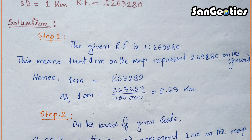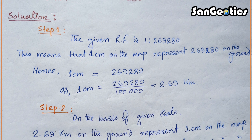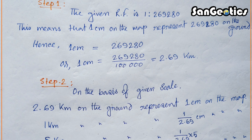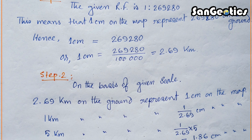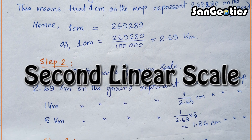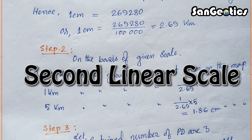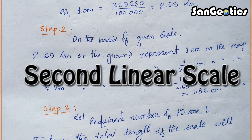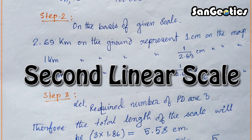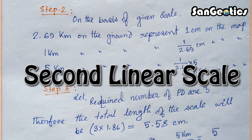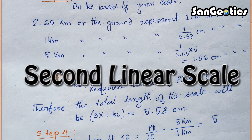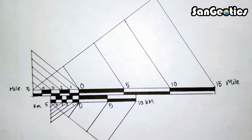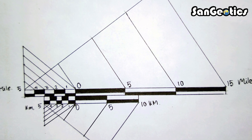Similarly, applying these four steps we calculate the second linear scale. You can see on screen that we have already calculated the second linear scale. These are the simple steps of calculation of a linear scale. Now let's see how to draw or construct the comparative linear scale using these two calculations.